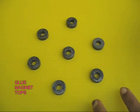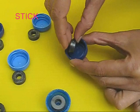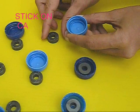Apply glue to the tops of all these seven magnets and then stick them to the bottom of plastic bottle caps. Remember that the orientation of the magnets would not change.